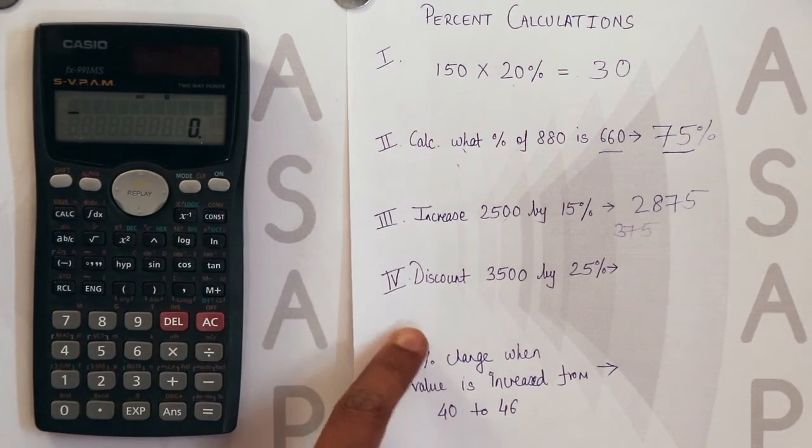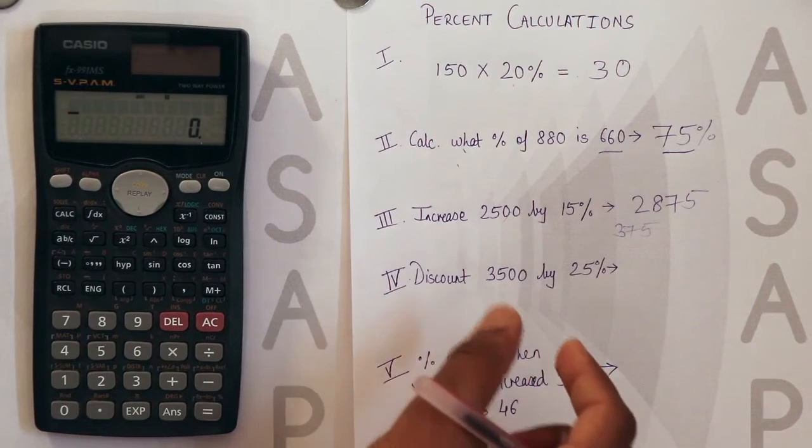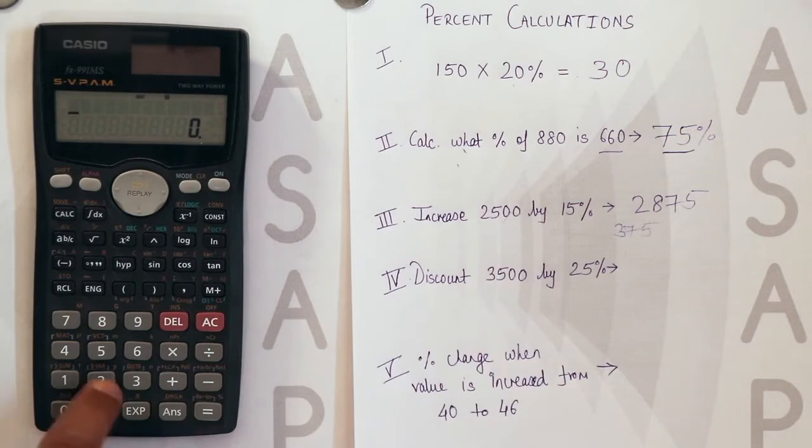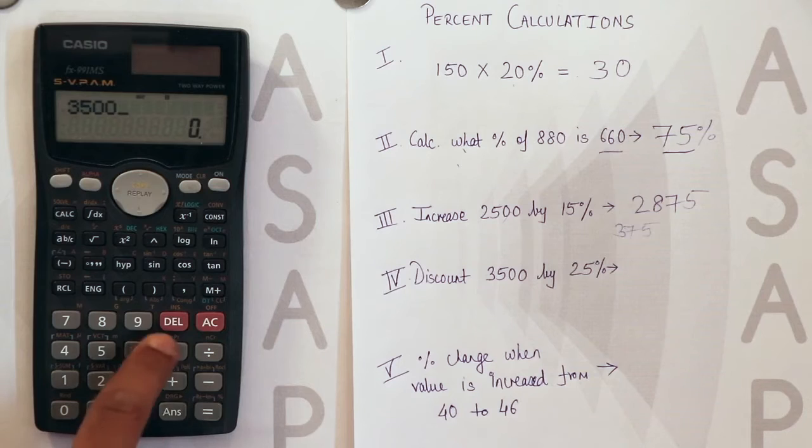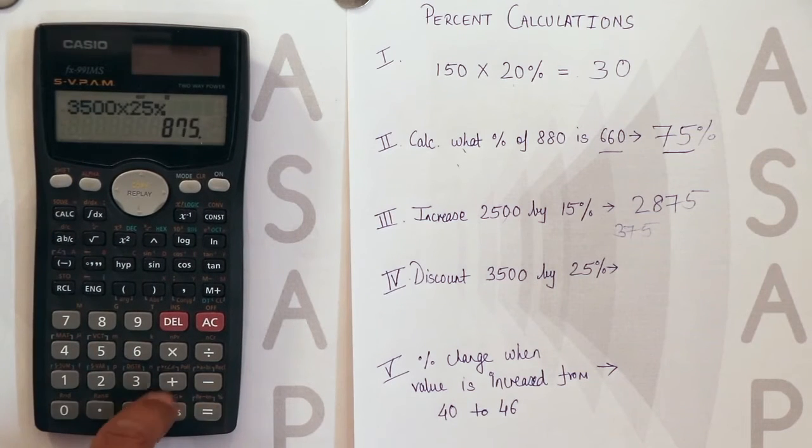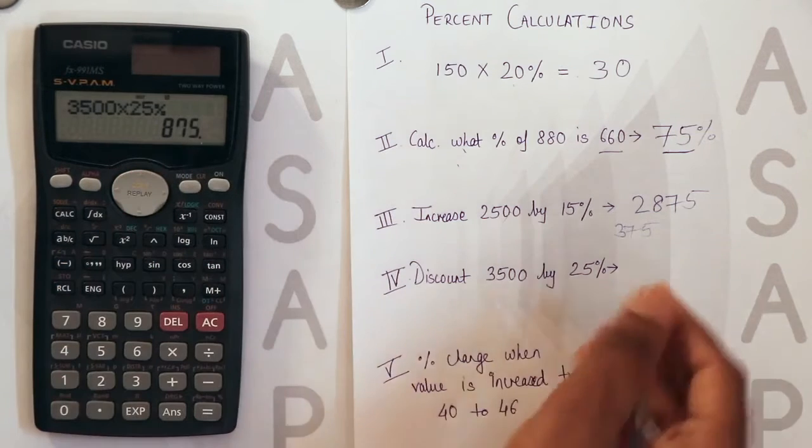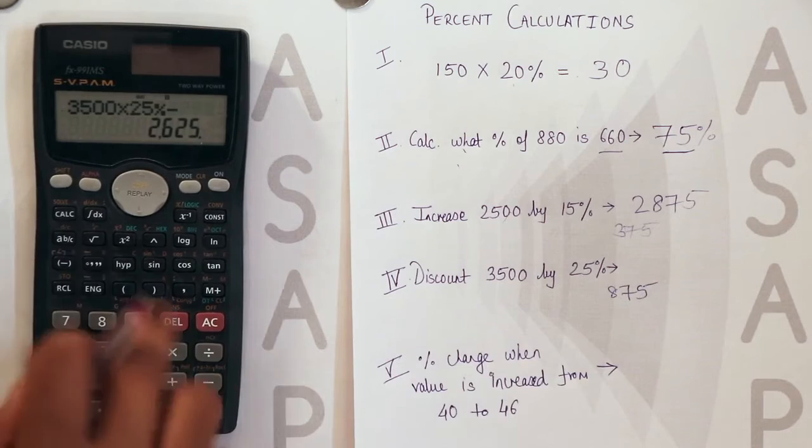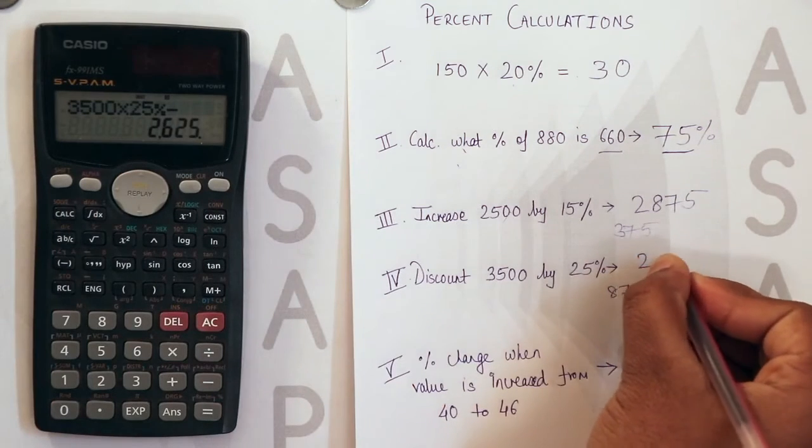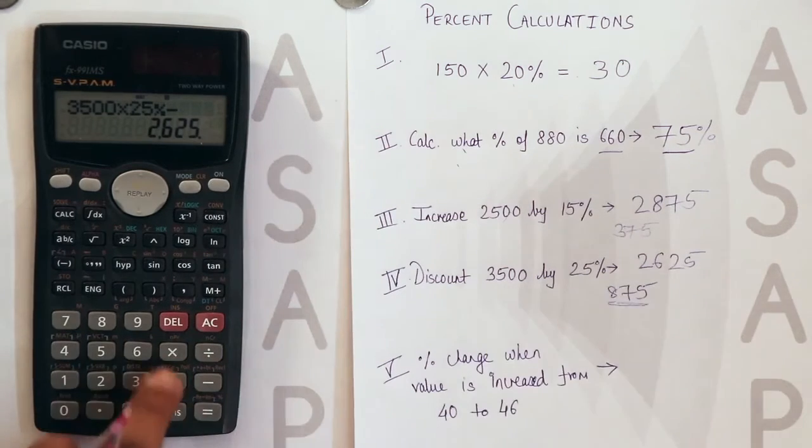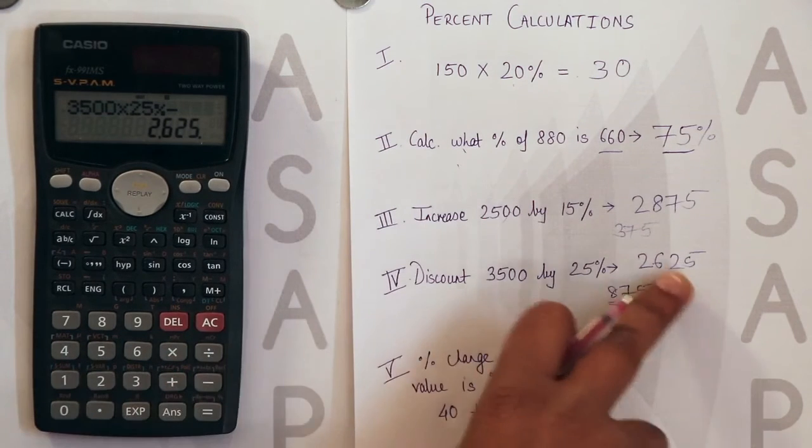Another type of problem is if we need to calculate discount on a particular number by some percentage. Here we have 3500 by 25%. Enter 3500 into 25, shift, equal to. You get the discounted price, that is 875. Press the minus sign and we get the final answer, that is 2625.